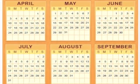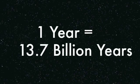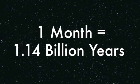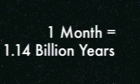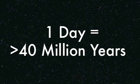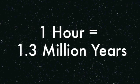The gist of this exercise is to imagine the entire history of the universe unfolding in the course of one human calendar year. Given that the universe is about 13.7 billion years old, that would mean that each month translates to about 1.14 billion years, each day would be about 40 million years, and each hour would be about 1.3 million years.